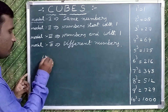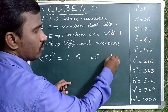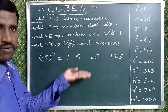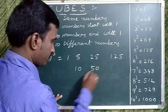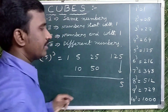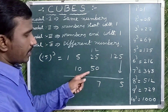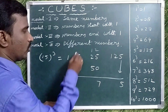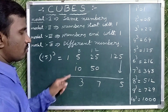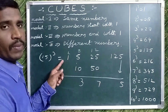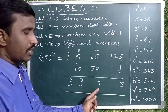Now observe 15 cube. Write 1, 5. 5 square is 25. 5 cube is 125. Double of the middle numbers: 5 times 2 is 10, 25 times 2 is 50. Now add: write only 5; carry 12 forward. 5 plus 2 is 7. 5 plus 2 plus 1 is 8; write 8. 5 plus 8 is 13 — write 3, carry 1. 1 plus 1 is 2; write 2. 2 plus 1 is 3. Therefore 15 cube is 3375.